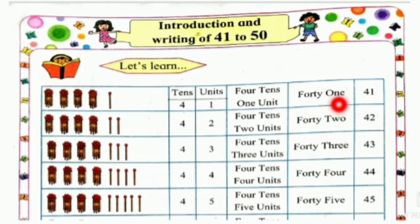41. Then, again 4 tens and here we have 2 units. So, 4 tens and 2 units is 42.